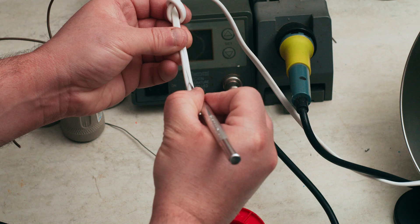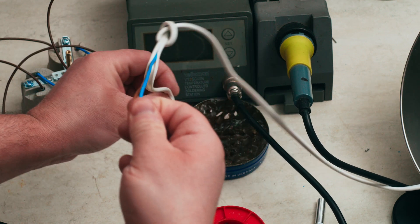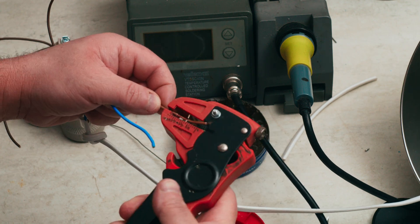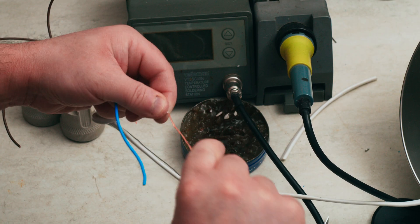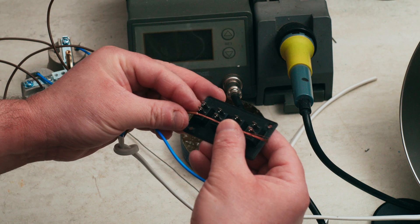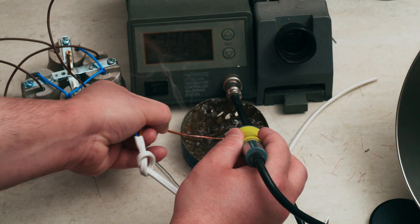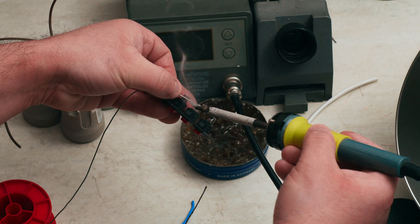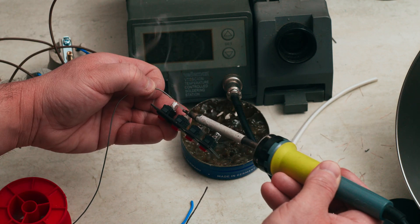Strip the outer jacket of the power cable right after the knot. Measure and remove the isolation of the live wire to form a copper bar. Then, tin this bar well.